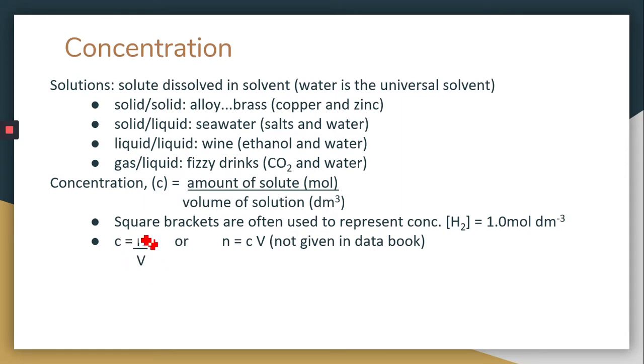The formula for concentration, c equals n over V, n is for moles, is given to you in your data booklet. We can rearrange that so that moles is equal to c times V, or concentration times volume. That one's not given to you in your data booklet, so you need to be able to solve for concentration or moles or volume using this ratio.